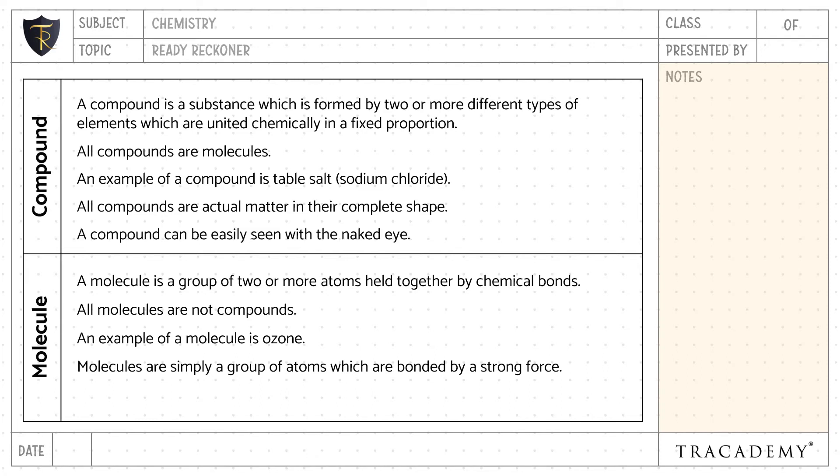A compound can be easily seen with the naked eye, whereas a molecule cannot be seen with the naked eye as they are at the atomic level.